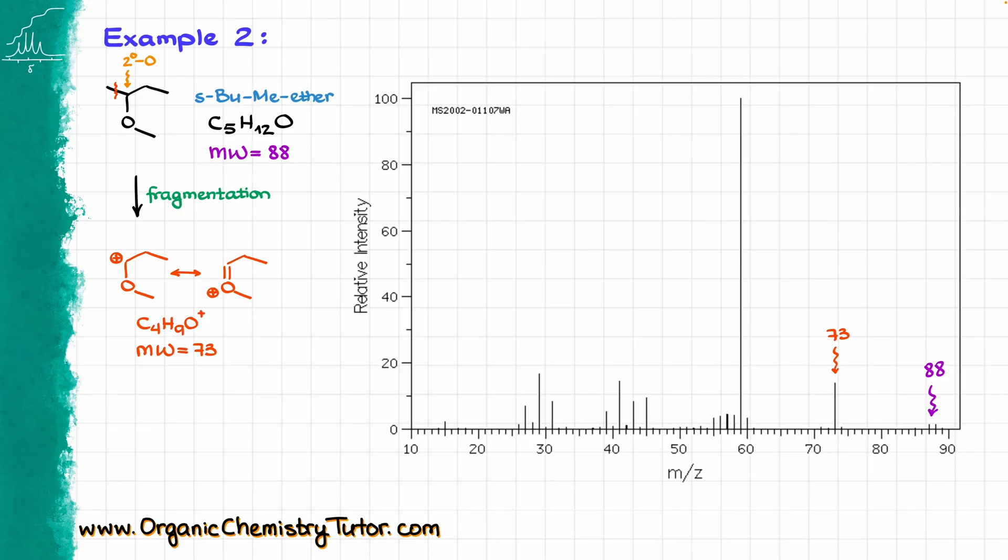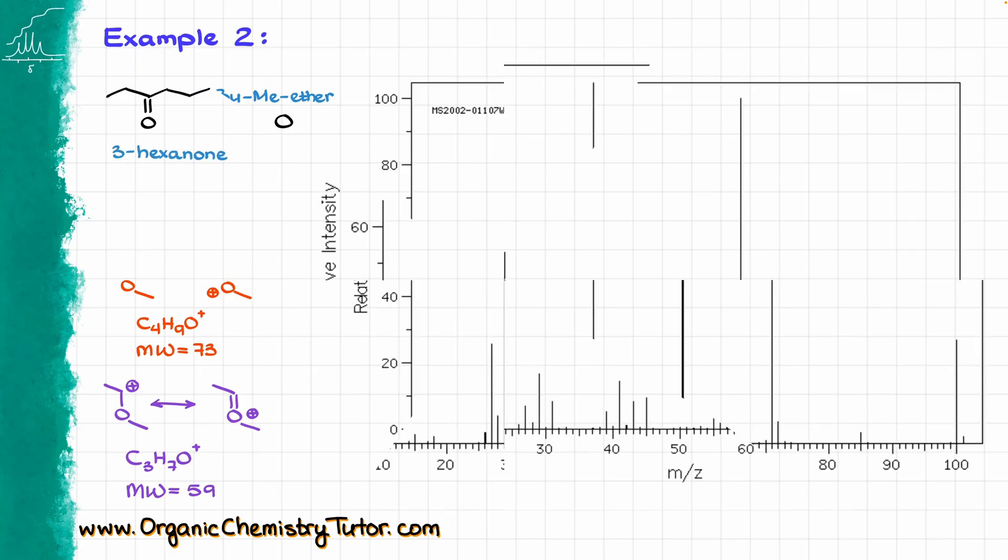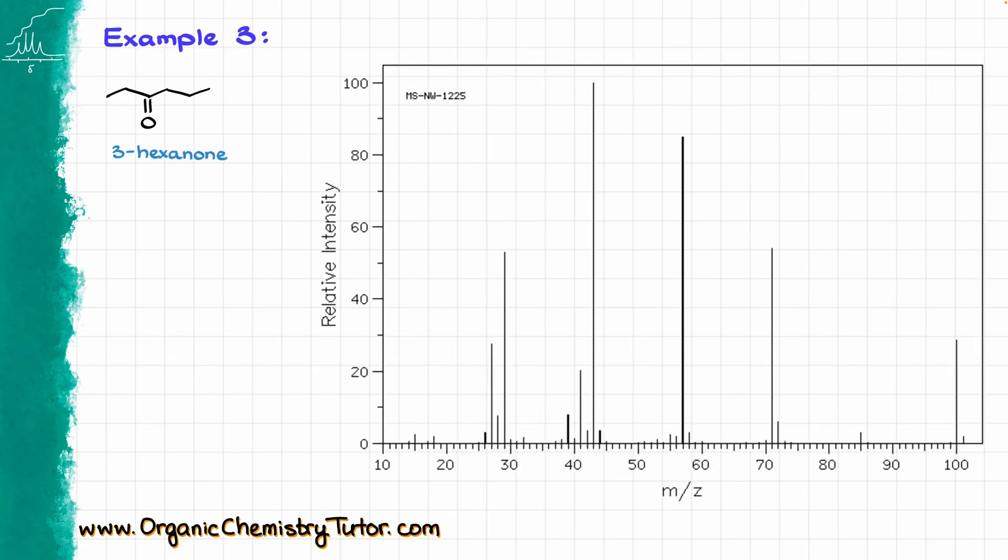Likewise, if we cut the molecule from the other side, over here, we are going to have the next molecular ion with the formula C3H7O, and that one has the molecular weight of 59, and we see that signal as well. And like before, I am not going to look at the lighter ones at around 40 and below. So far, so good? Well, then let's take a look at the next example.